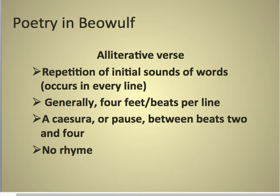Now for poetry and Beowulf. Here's a quick, simple definition of alliterative verse: it has repetition of initial sounds of words, occurring in every line. Generally there are four feet or beats per line. There is a caesura, or a pause, between beats two and four, and there is no rhyme.